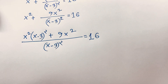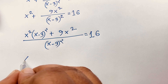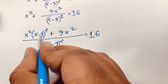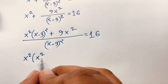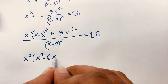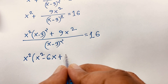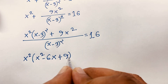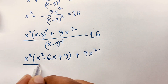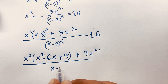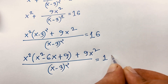Now I can expand this expression. We know that (a - b)² = a² - 2ab + b². So it will be x² minus 6x plus 9 (since 3² = 9), plus 9x² over (x - 3)² is equal to 16.